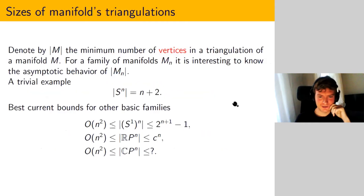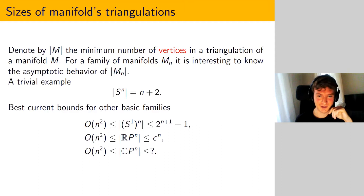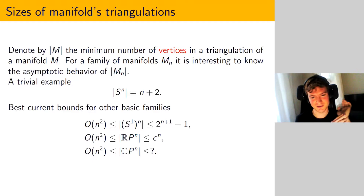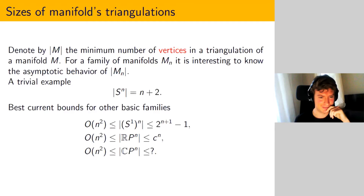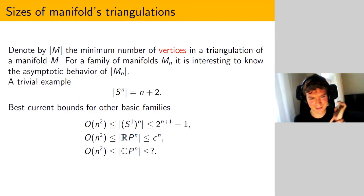The problem we are concerned with is the minimum size triangulation of a manifold, where by size I mean the number of vertices needed to triangulate the manifold. We're interested not just in individual manifolds but in families which depend on a certain parameter like dimension. As a trivial example, consider the n-dimensional sphere — we know that you need n plus two vertices to triangulate it.